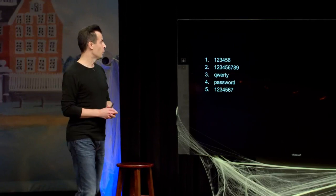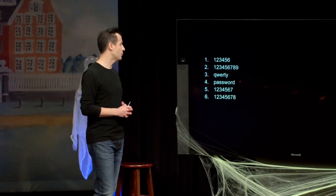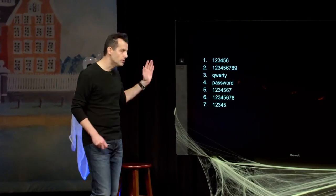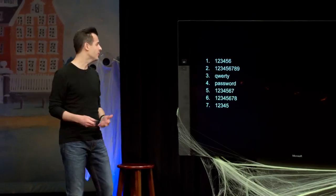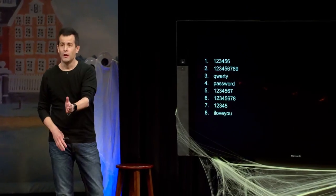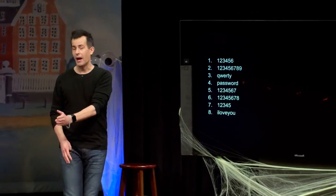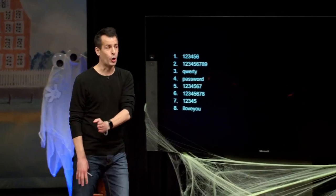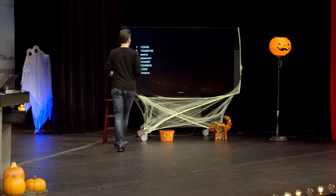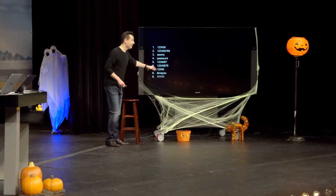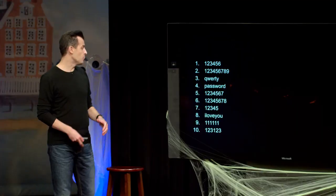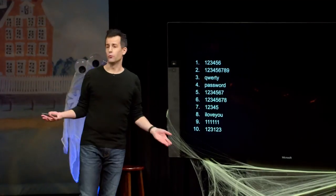After that was '1234567,' then '12345678,' then '12345.' If you think you're being clever by having 'I love you' as your password, well, there are a lot of other humans in the world who think they're being cute too. '111111' was also popular, and then '123123.' You can perhaps infer from this list why some of these passwords are the way they are — people needed a minimum password length, so they chose the simplest sequence that met that requirement.